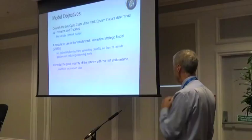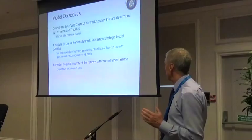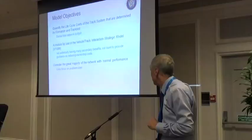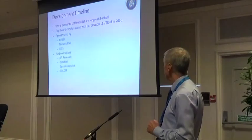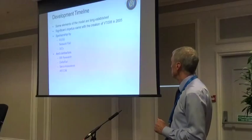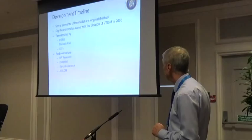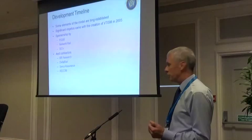This model covers that bit of the network which we might call normal. When we talk formation, track work and so on, we're normally talking about all those problem sites. This model puts those a little bit on one side and tries to deal with the majority of the more normal stuff. Some elements of the model go back to the days of British Rail research, but really the model came to fruition with the introduction of VITISM in around 2005. It's received financial sponsorship from RSSB and Network Rail, who essentially are the owner of this technology now.